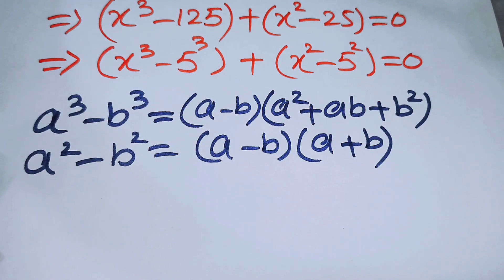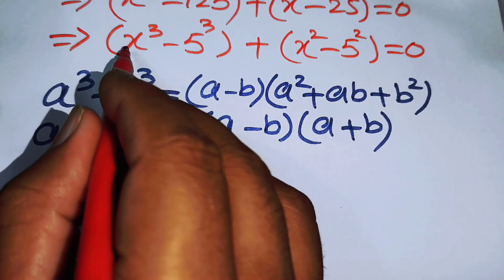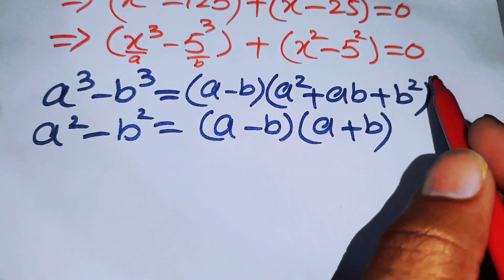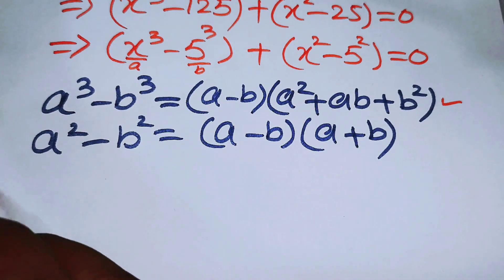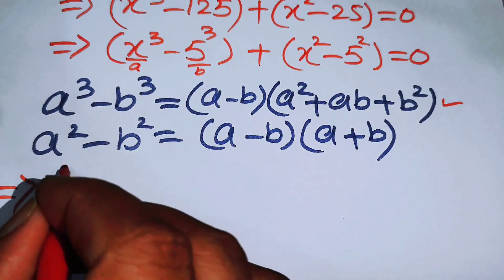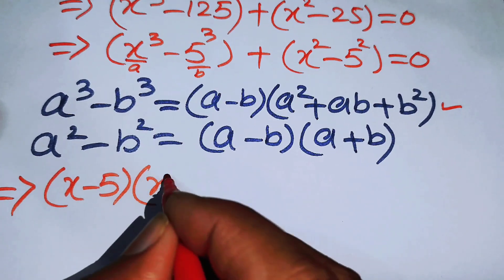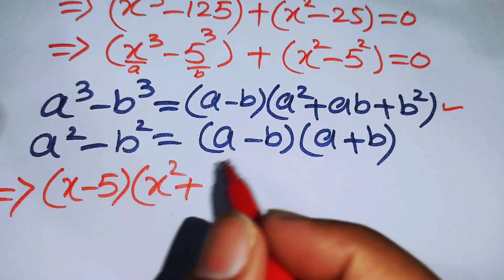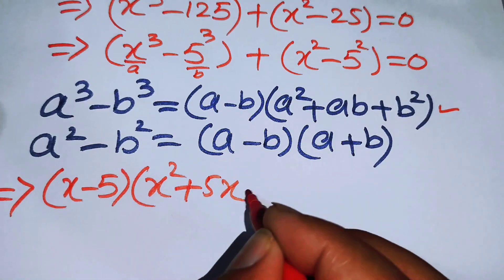We apply the cubic formula first, substituting a equals x and b equals 5 into the formula to get the factored output.